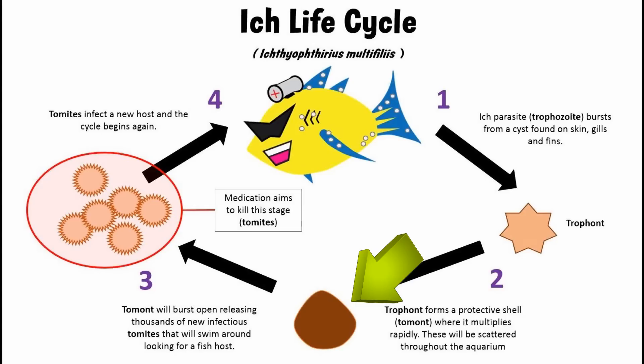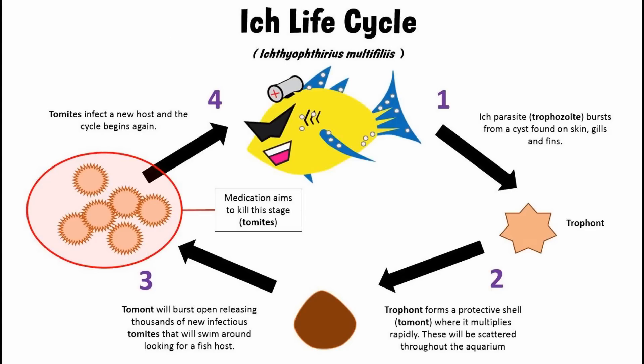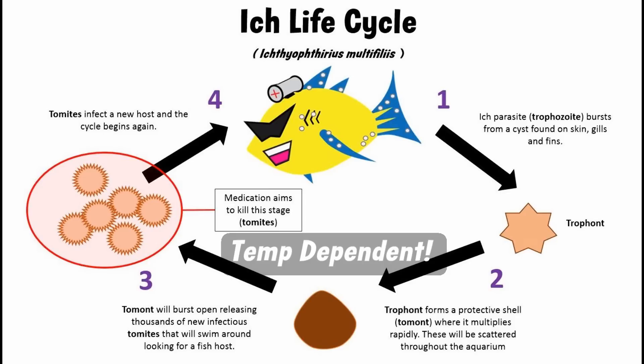Inside of this structure, the parasite is going to multiply rapidly and eventually burst, releasing hundreds if not thousands of infectious tomites, which will then swim around the aquarium looking for a new host — thus the cycle begins again. This entire process is very temperature dependent, especially the tomont stage where new infectious organisms are made and released.